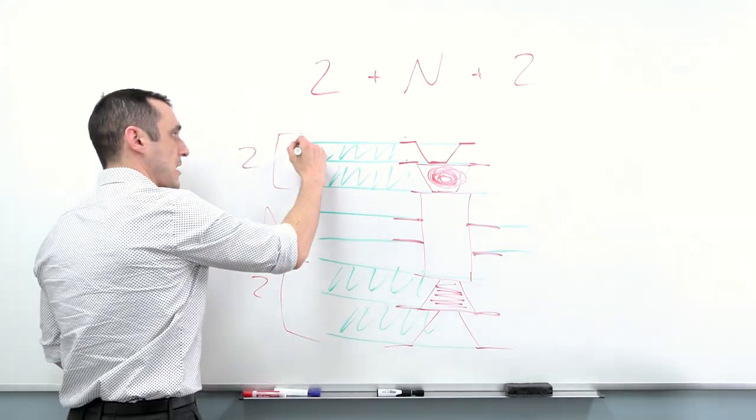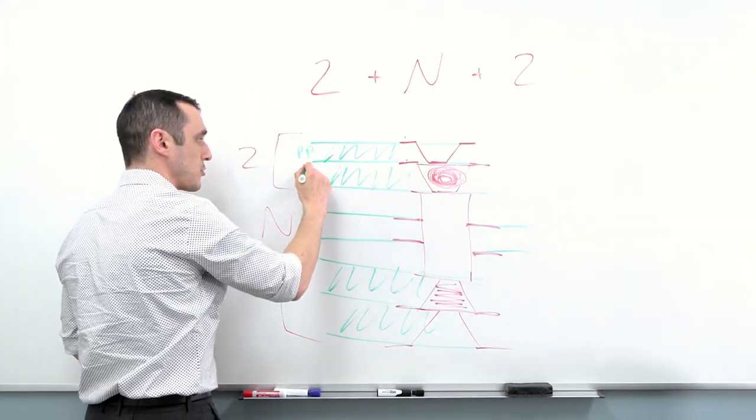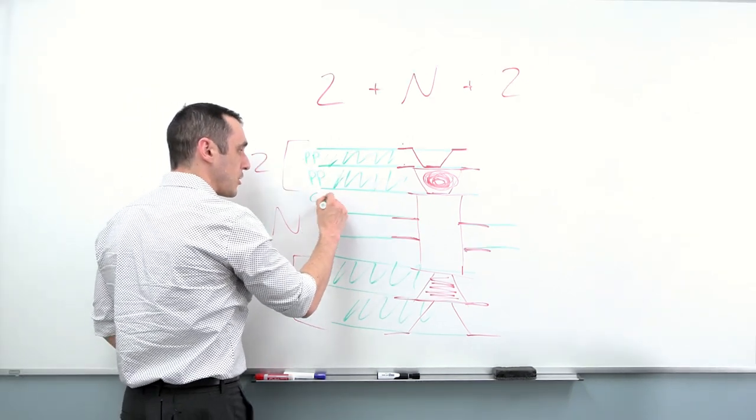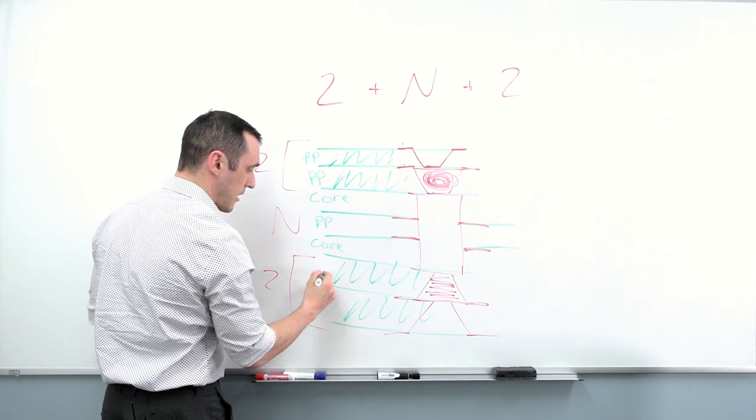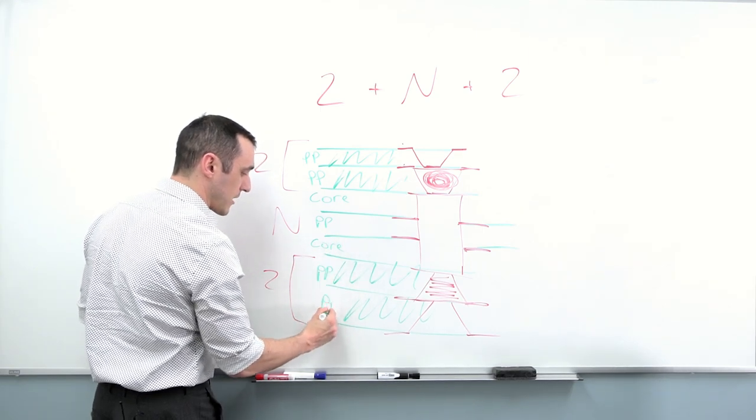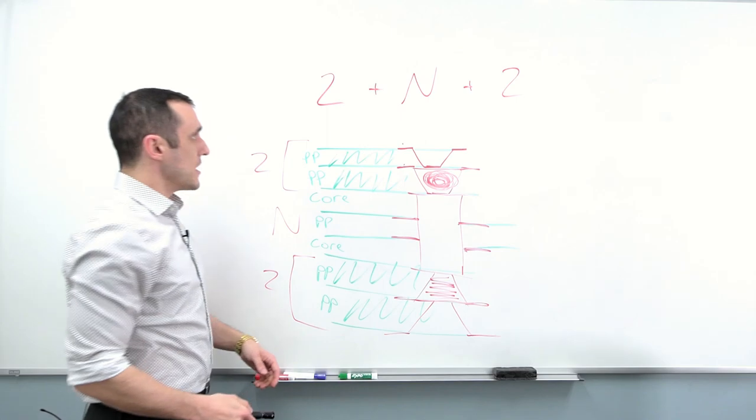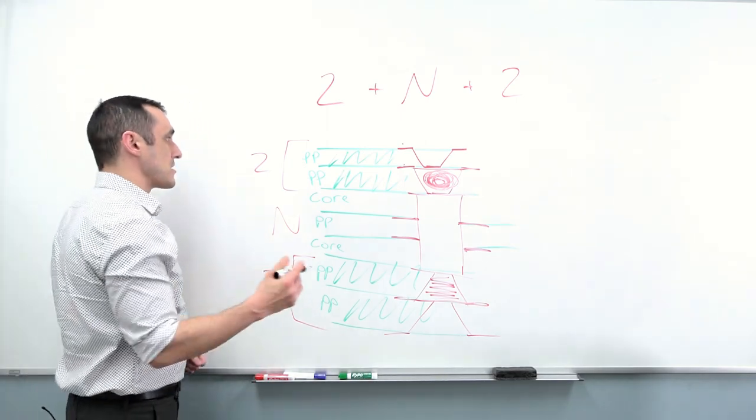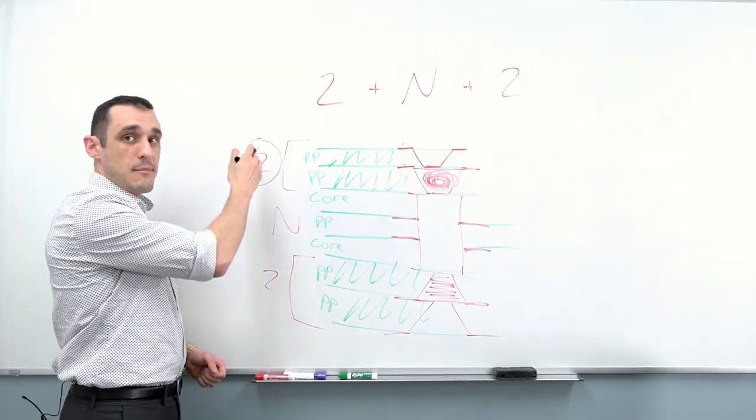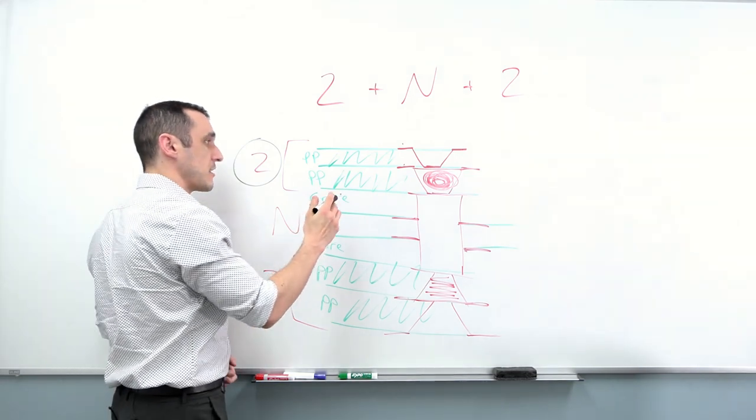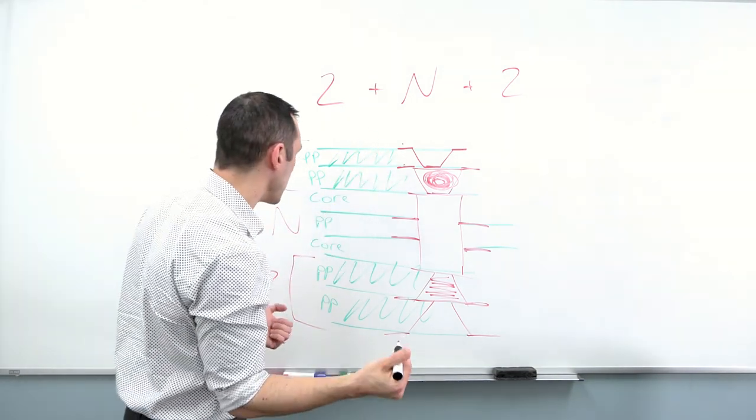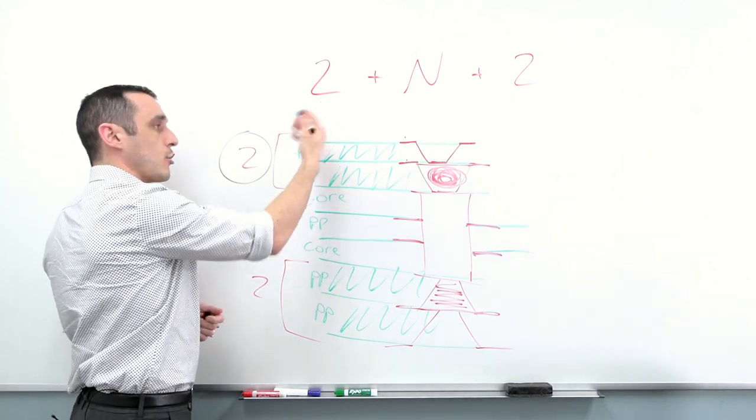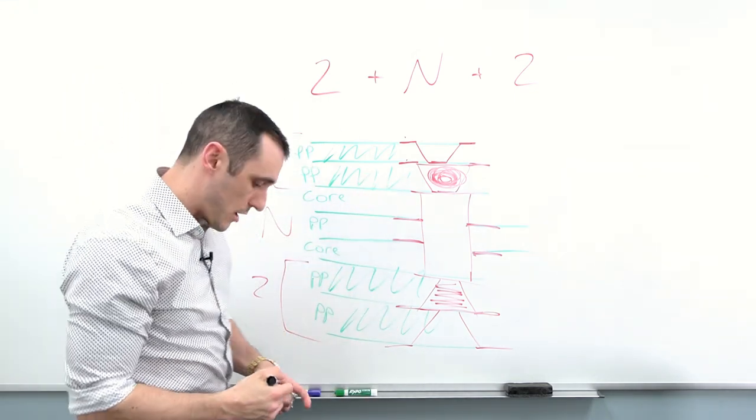Here, what you would typically have is prepreg, another prepreg, and then here you could have alternating core, prepreg, core, and then maybe prepreg and prepreg. This is essentially it - this is the stackup. This is named based on the number of lamination steps and not necessarily the number of layers or the number of prepreg sheets that you're spanning here. However, they are coincident here in this layer stack that I've drawn.